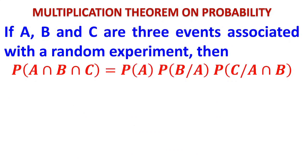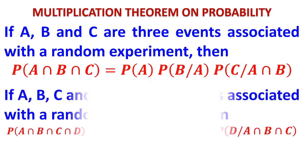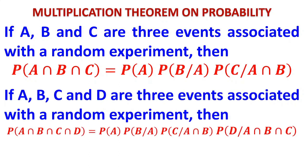Now suppose you have three events A, B, and C associated with a random experiment occurring in order — A occurs first, then B, then C. The probability of A and B and C, that is A intersection B intersection C, is P of A into P of B slash A — that is P of B knowing that A has occurred — and P of C knowing that A and B have occurred. If A, B, C, and D are four events, we can continue: A intersection B intersection C intersection D, and so on.